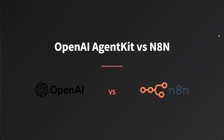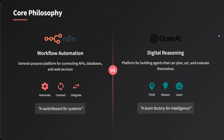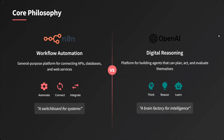First of all, talking about the core philosophy: n8n is a workflow automation platform — not just AI-related, but a general-purpose platform for connecting APIs, databases, web services, etc. While OpenAI's Agent Kit is a platform for building AI agents that can plan, act, and evaluate themselves — a brain factory for intelligence. So do remember: n8n is workflow automation, while OpenAI Agent Kit is more towards building agents.